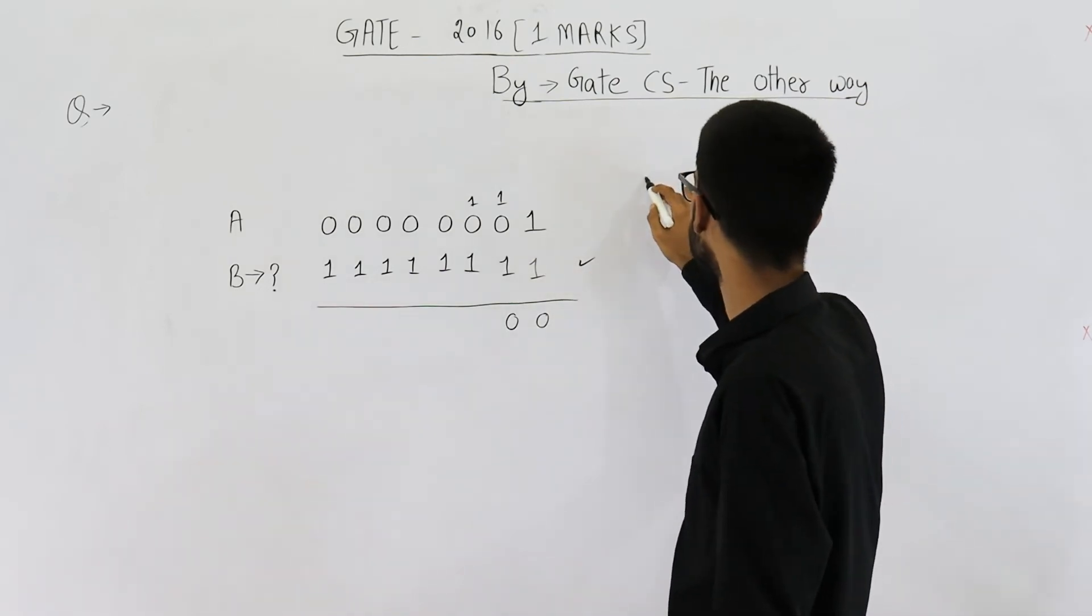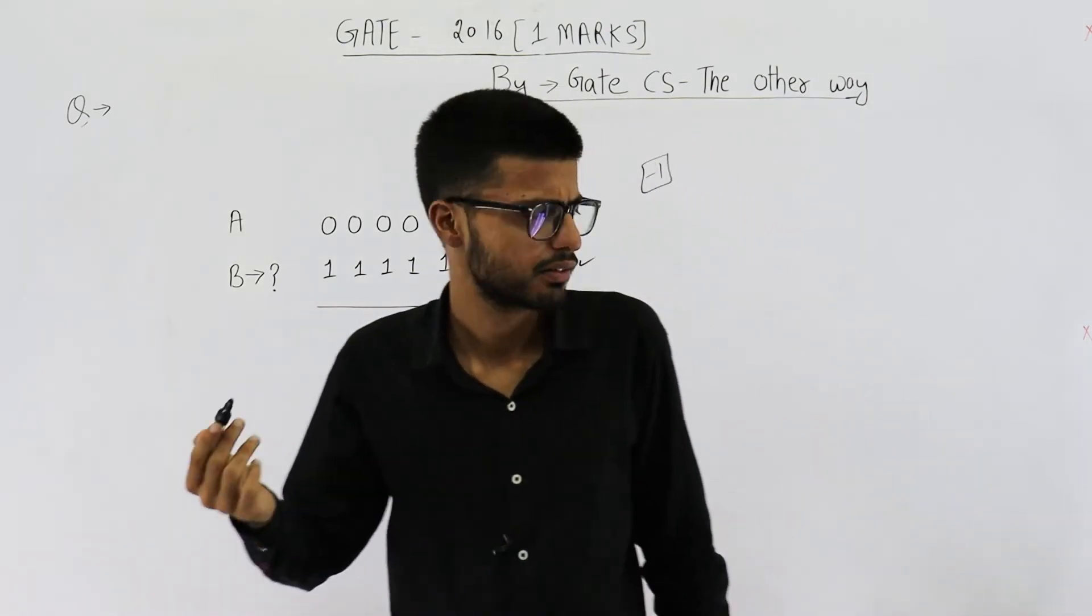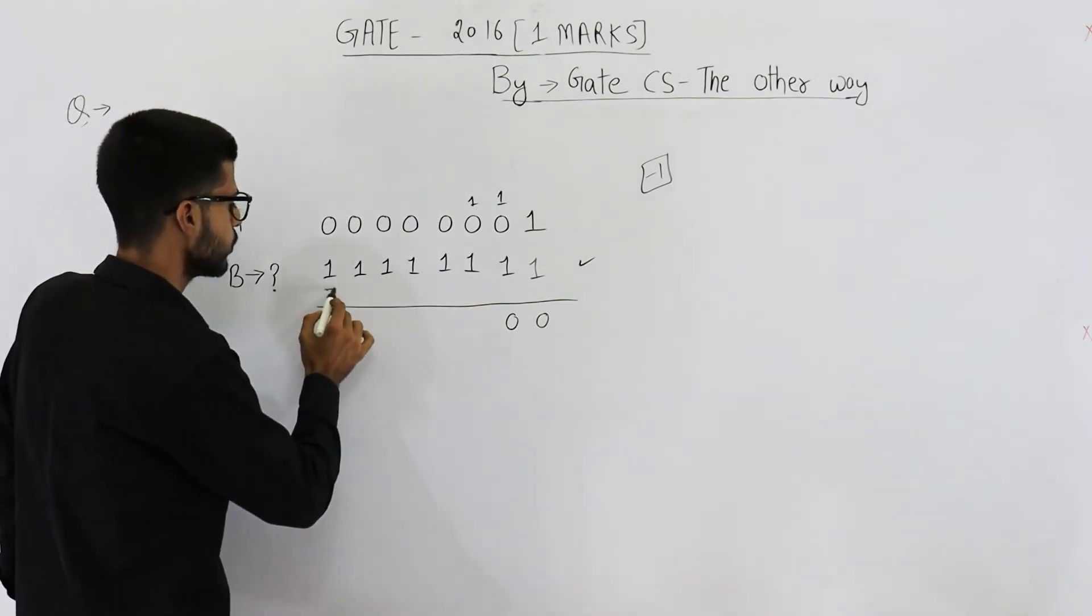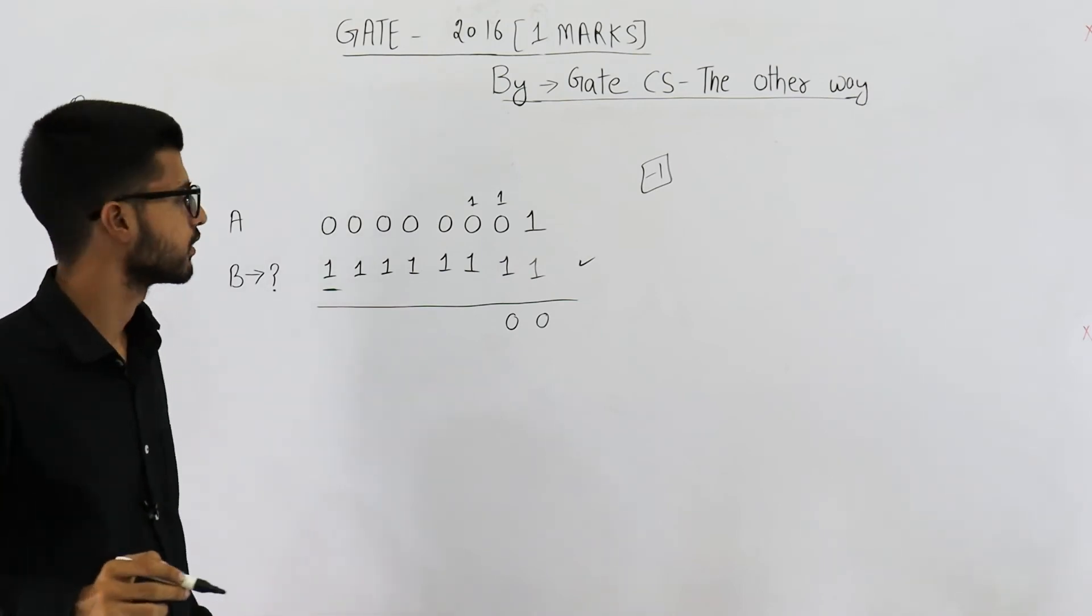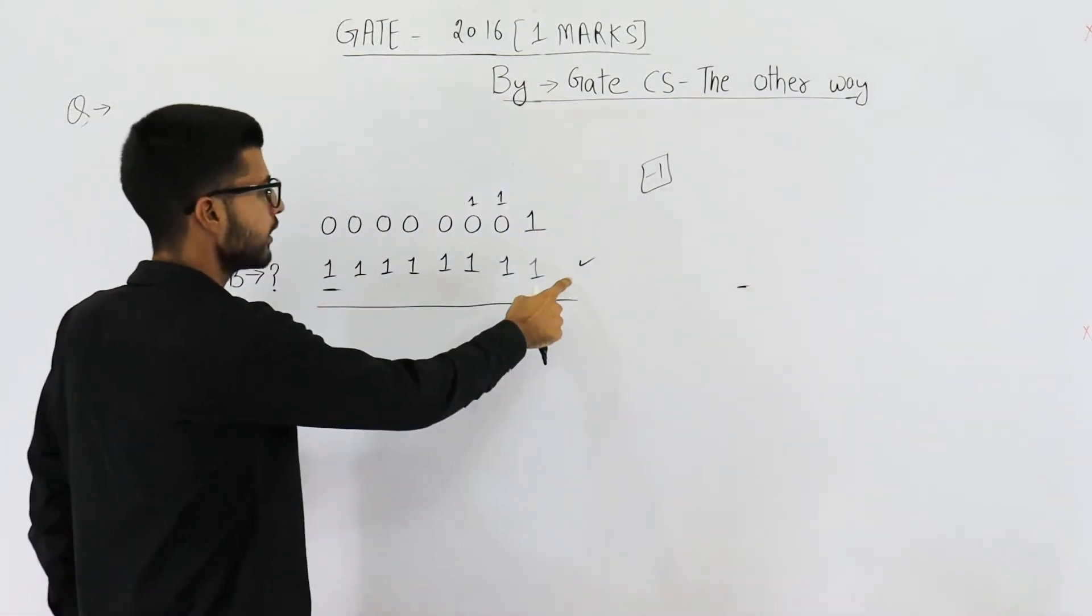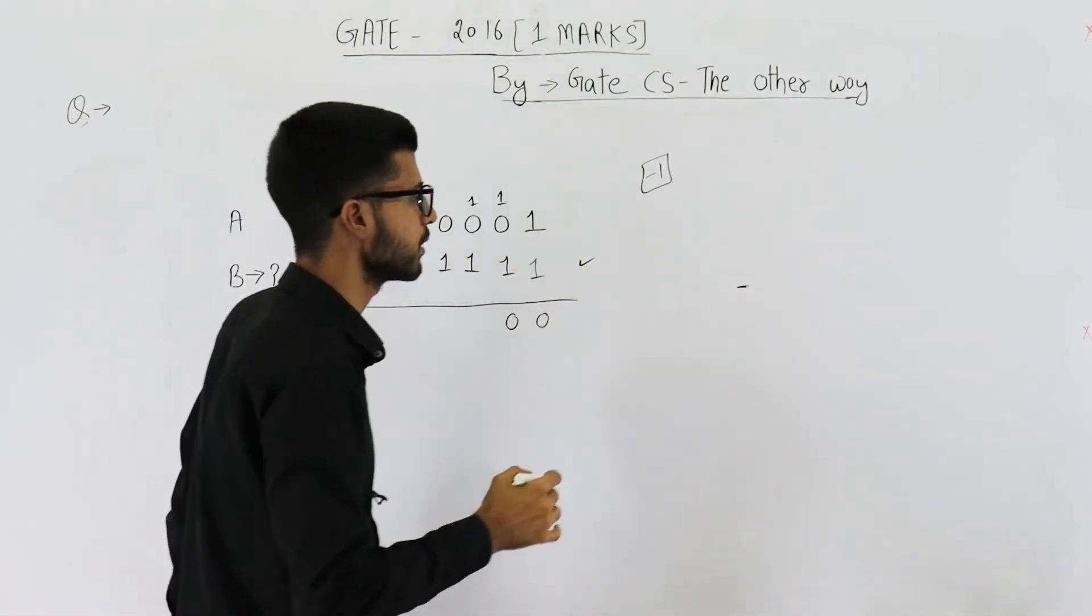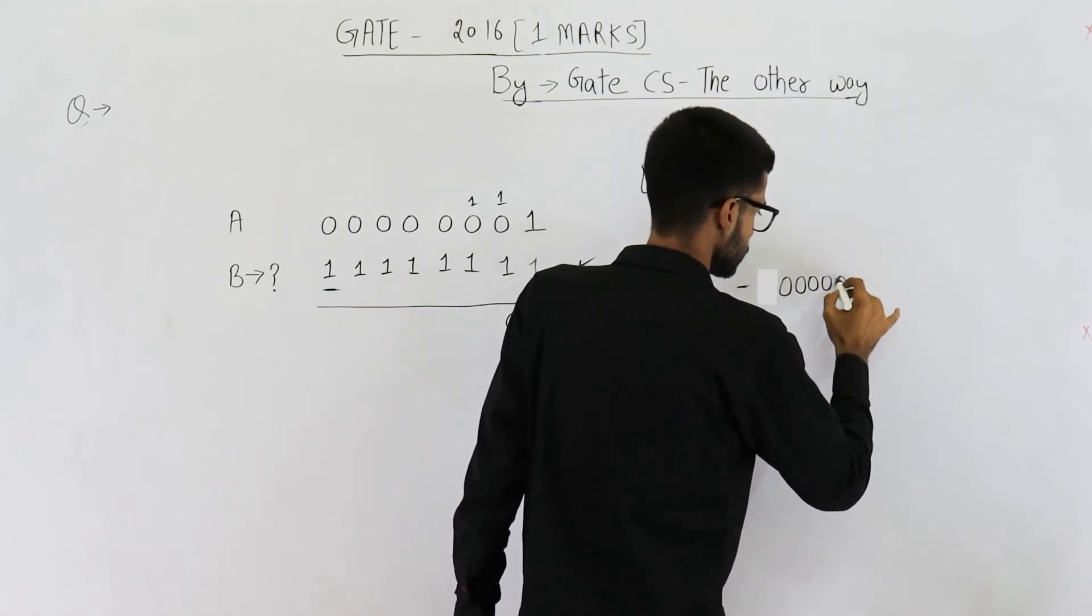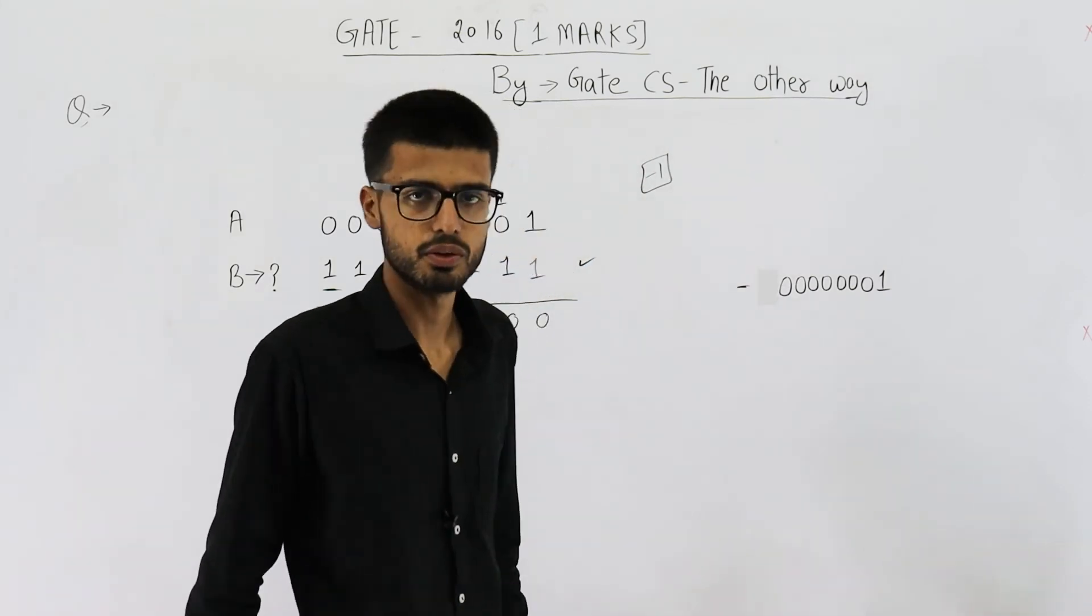So, its decimal value will be minus 1. Don't say it's 255 or something like that. It is 2's complement number. Most significant bit is 1. It indicates that this one will be a negative number. That means you put a negative sign and take 2's complement of this entire number. Its 2's complement will be 7 zeros. Followed by a 1. So it has minus 1.